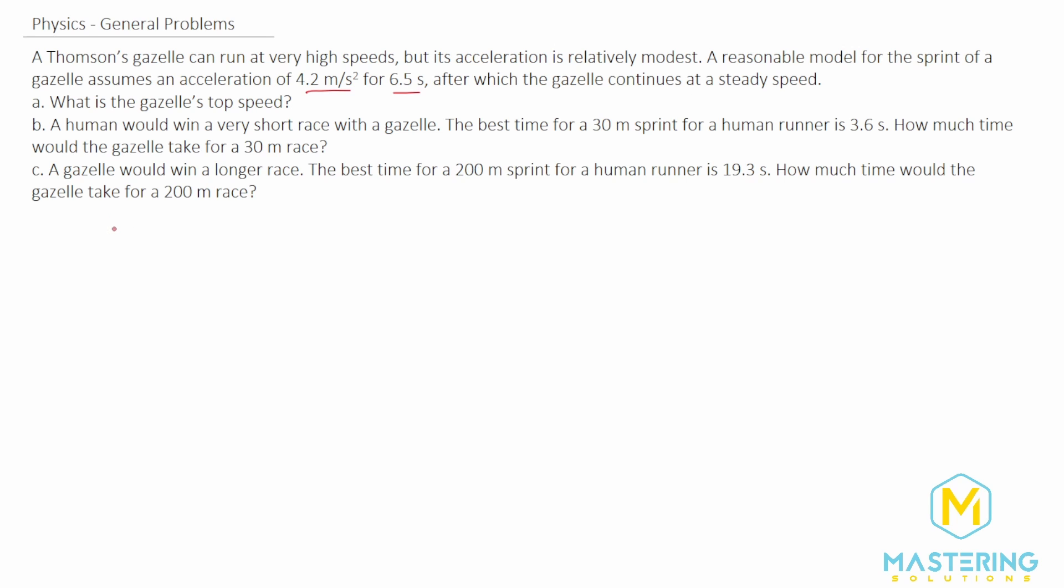What are we given to start off with? They don't tell us any initial velocity so we're going to assume that it's starting from rest so the initial velocity will be 0 meters per second. The acceleration they tell us is 4.2 meters per second squared and the time will be 6.5 seconds. So what's going on is it's accelerating for a section and then it's going at a constant speed for a section.